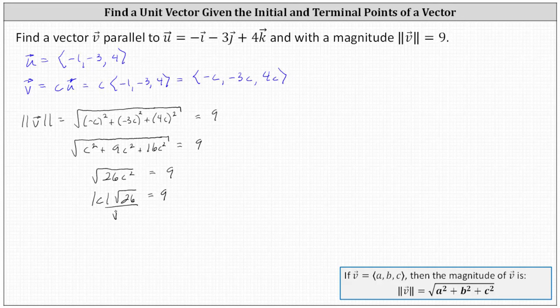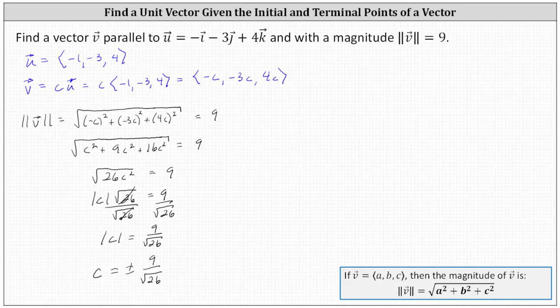We divide both sides by the square root of 26. Simplifying, we have the absolute value of c equals nine divided by the square root of 26, which indicates c is equal to plus or minus nine divided by the square root of 26. So there are two values of c we can use.